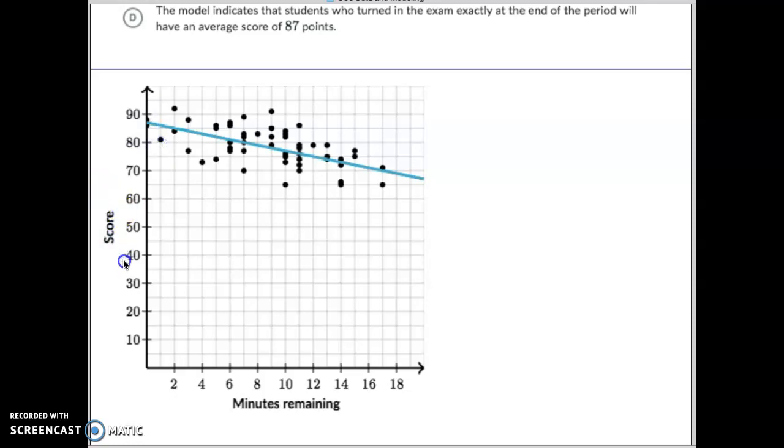So an average score of 87 when they spent how much time is that? Right here at the very beginning at the y-intercept. The y-intercept represents zero, right?